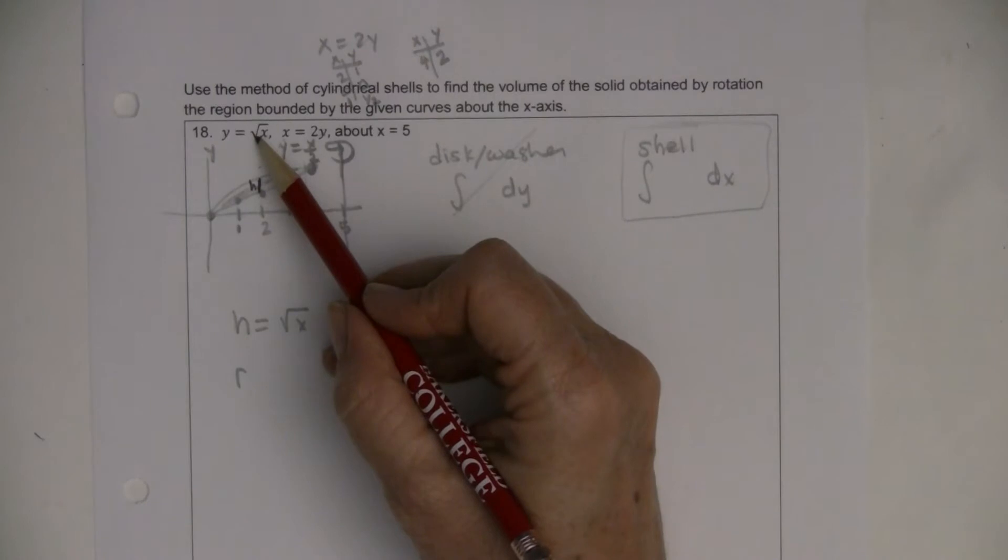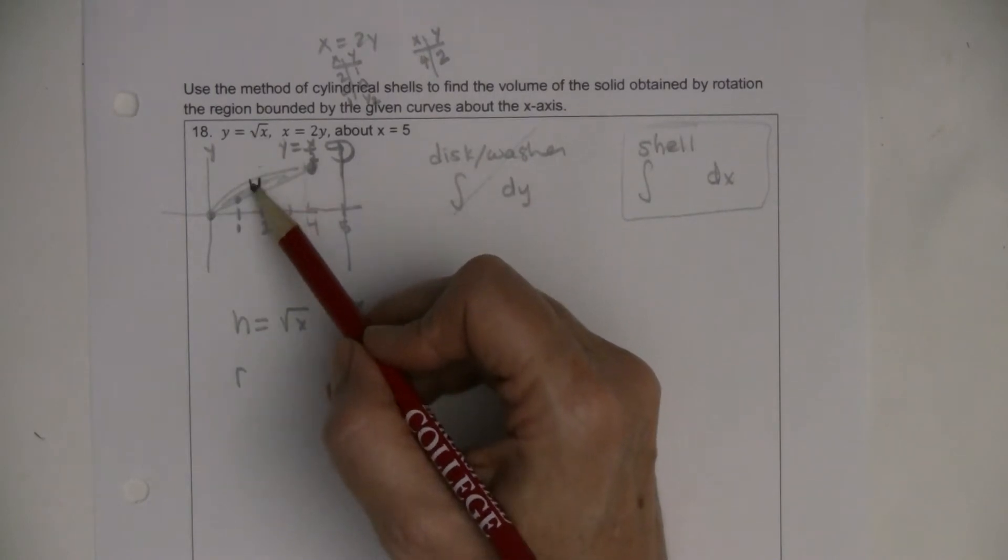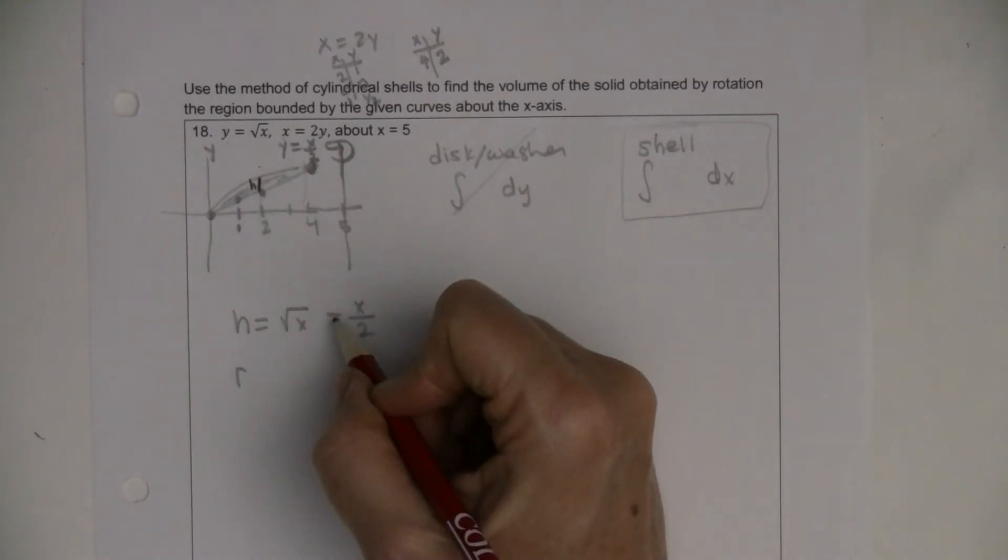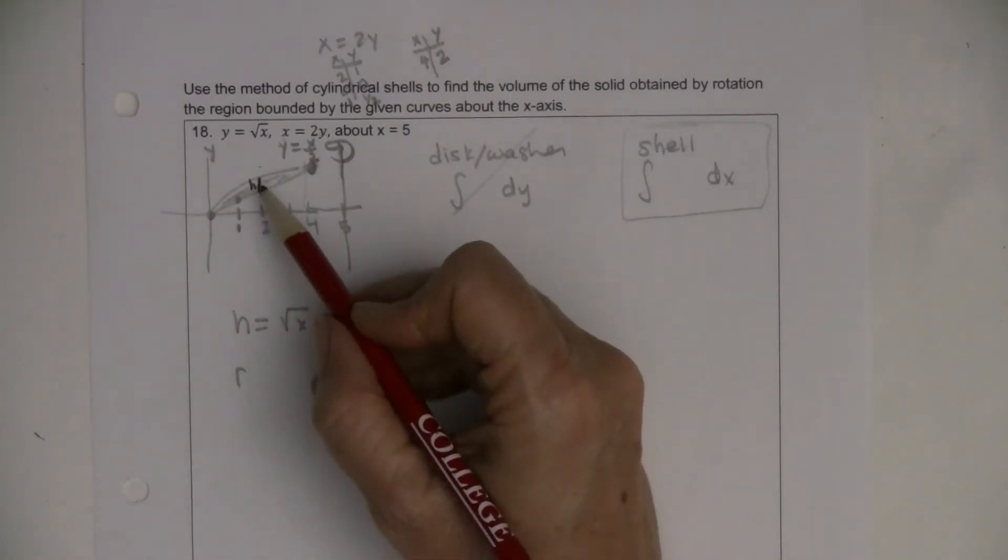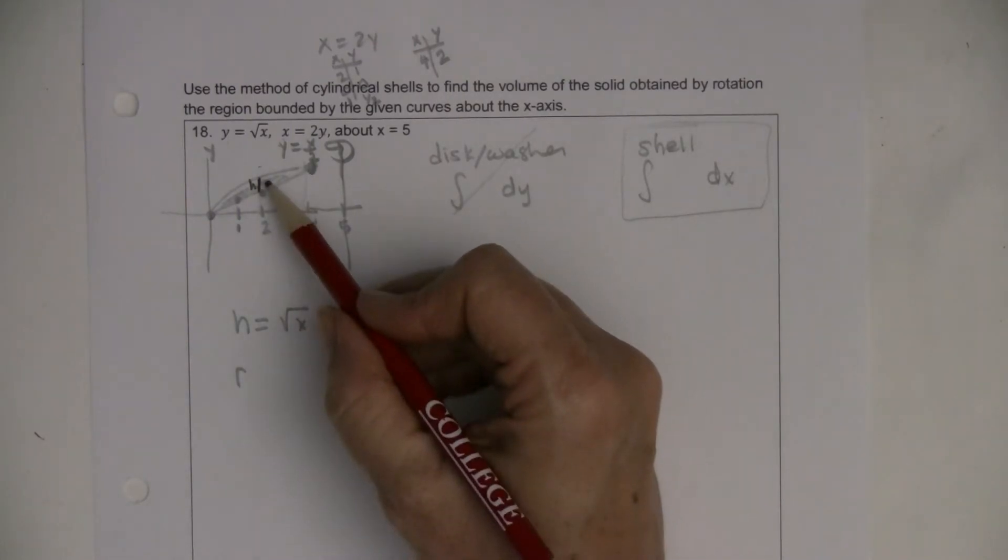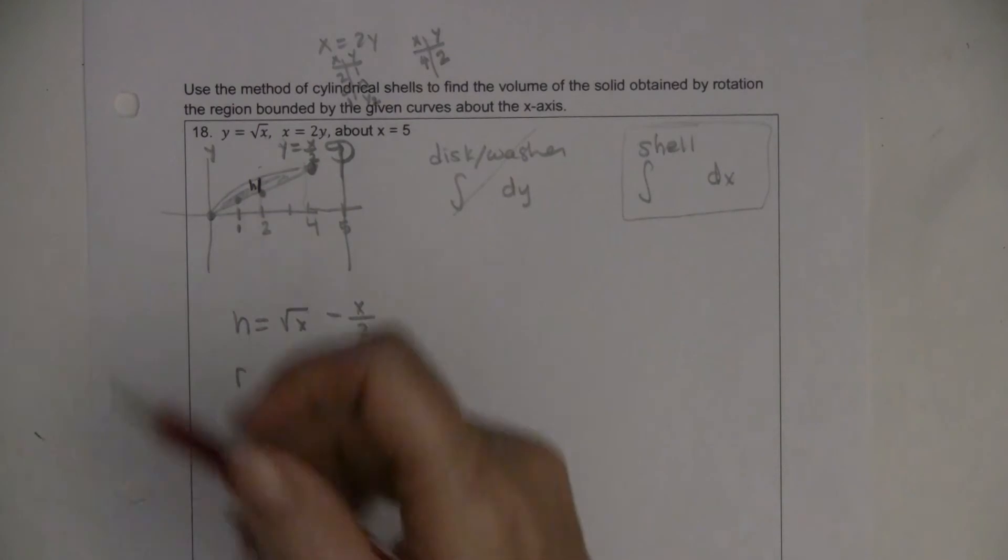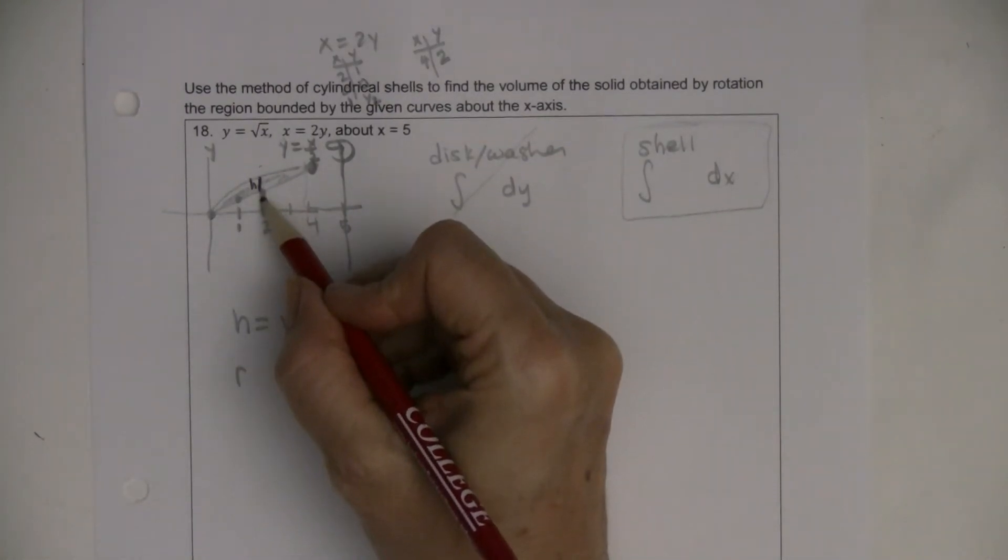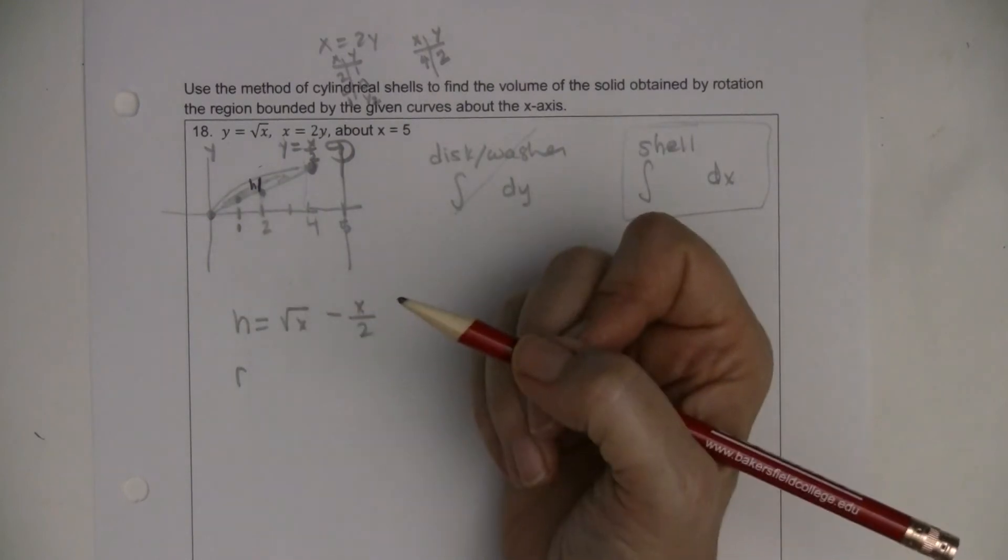My top curve is y equals the square root of x, so this distance from here to here, the whole thing, is the square root of x. And then I want to take away, because I just want h, the line x over 2. So x over 2 is that distance right there, y equals x over 2, and I want to remove that out.